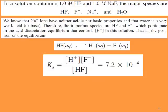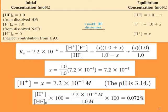Substituting the equilibrium concentrations into the Ka expression: 7.2 × 10⁻⁴ = x(1 + x) / (1 − x). Since Ka is much smaller than the initial concentration of the acid — applying the 100 rule, the initial concentration is at least 100 times bigger than Ka — we can neglect x, so (1 + x) ≈ 1 and (1 − x) ≈ 1.